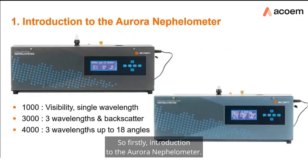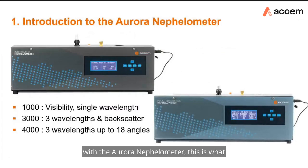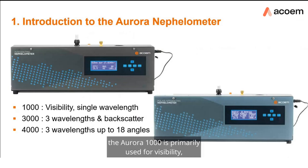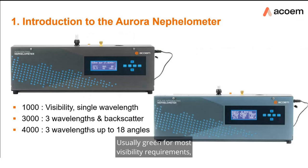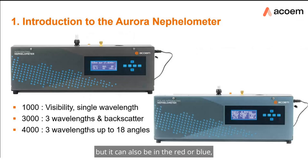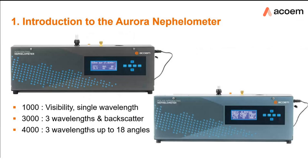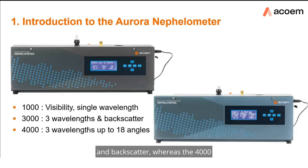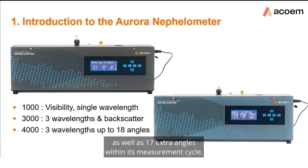The Aurora nephilometer comes in three main variations. The Aurora 1000 is primarily used for visibility, measuring scattering at a single wavelength — usually green for most visibility requirements, but it can also be red or blue. The Aurora 3000 and 4000 are generally used in research applications: the 3000 has three separate wavelengths simultaneously and backscatter, whereas the 4000 adds the ability to have full scatter as well as 17 extra angles within its measurement cycle.